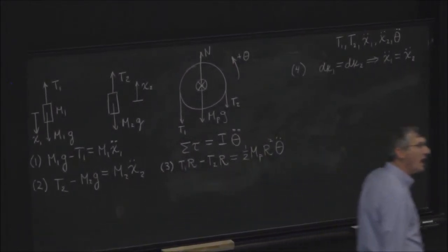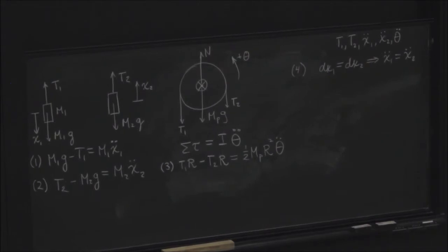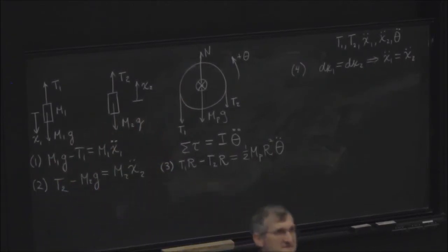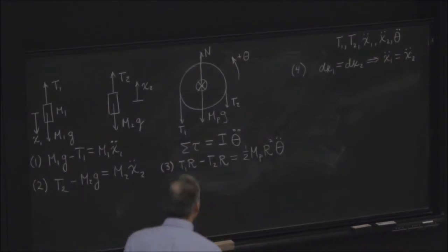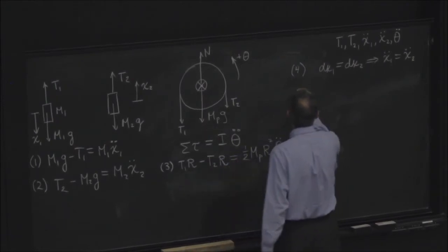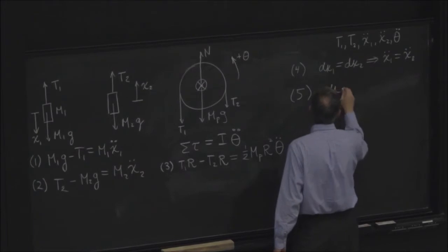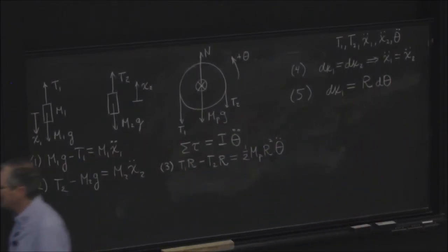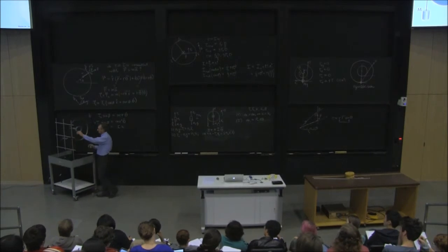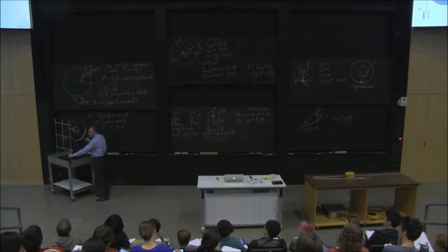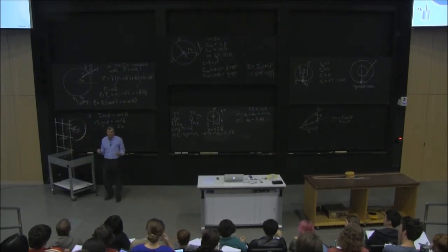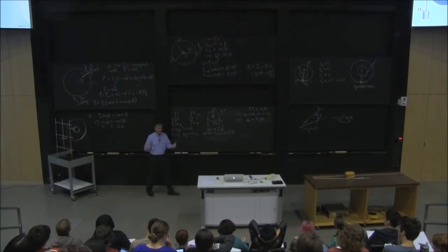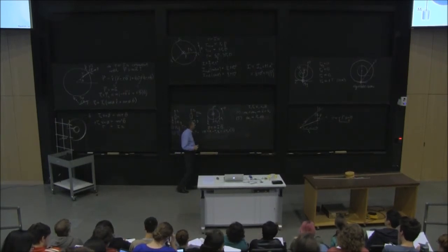Can you do dx1 equals r d theta? So he claims, actually he opines, that dx1 would be equal to r times d theta. That is, if the string doesn't slip around the pulley, then as this moves down, it has to drag the circumference of the wheel around the same amount as the mass moved down. So we're good. We have all the equations we need. It's just a matter of tidying up the algebra.